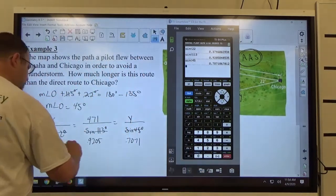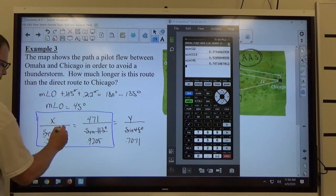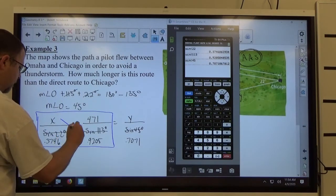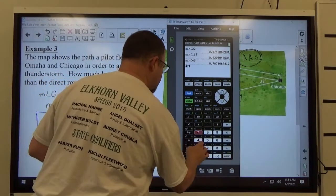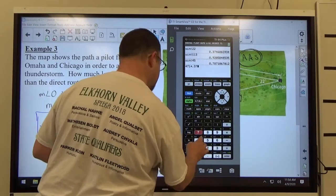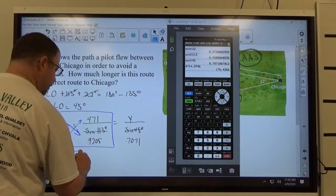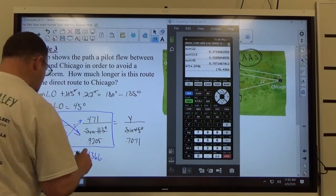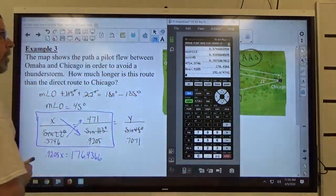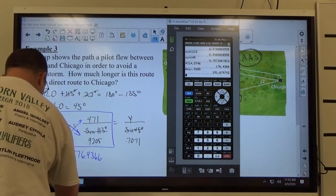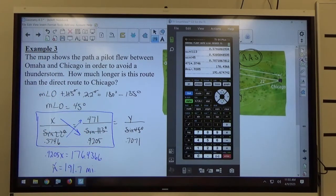If I use this side of the proportion, that will allow me to find X. X times 0.9205 equals 471 times 0.3746. So 0.9205X equals 471 times 0.3746. So that's 176.4366. Divide both sides by 0.9205. And we get a distance of 191 point, let's go 7, 191.7 miles. Everything yesterday was around the nearest tenth. So we'll just go ahead and assume that's what they want on this too.